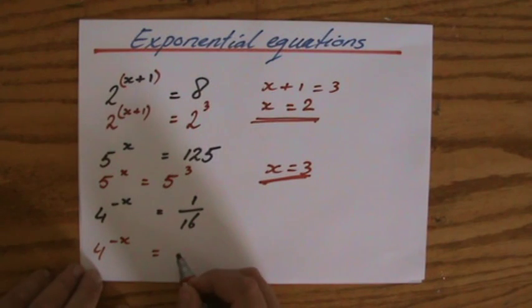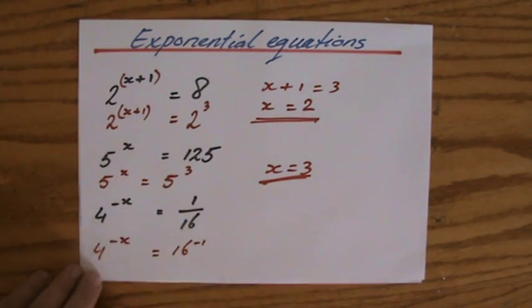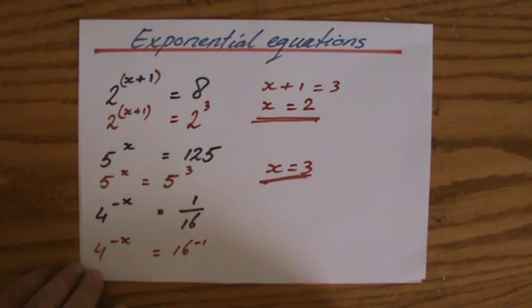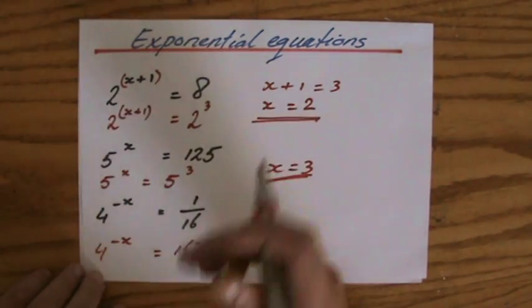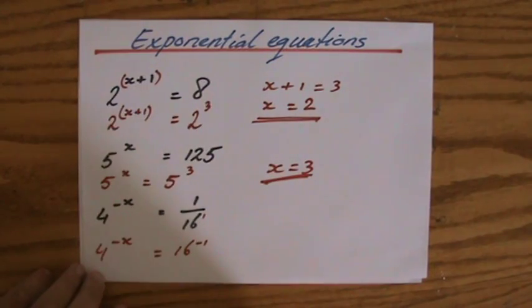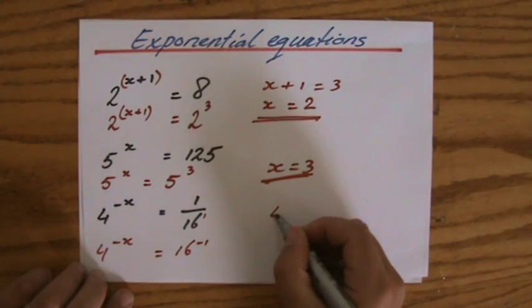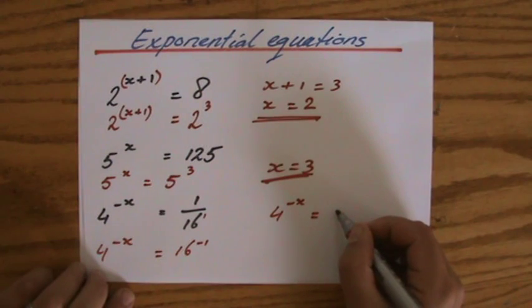Let's write 16 as 16 to the power minus 1. Because I turn it around, the index, the 1 becomes a negative. Now I'm going to continue here. So 4 to the power minus x equals 4 to the power minus 2.